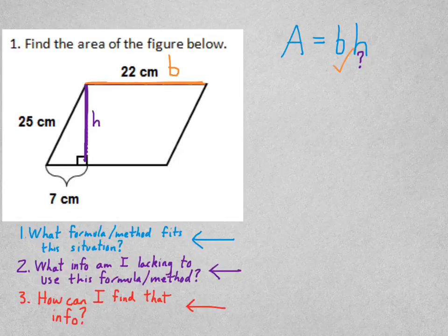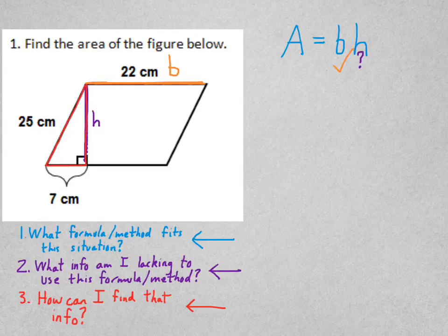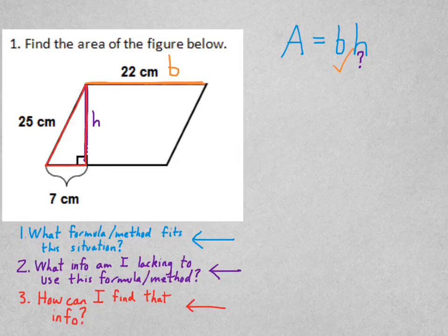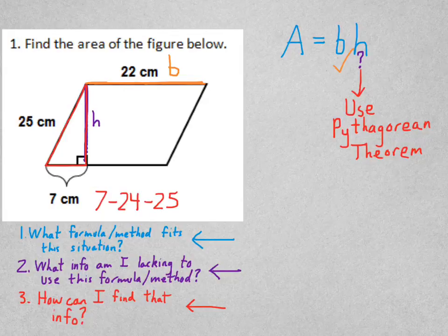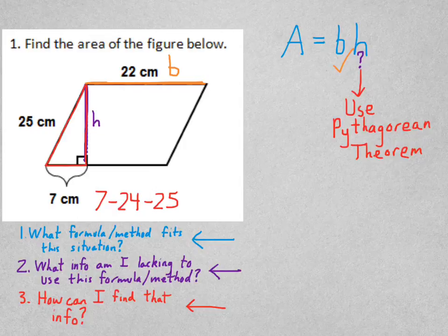The last question is how can I find that information? How can I find what the height is? Well, if you look, we've got this right triangle here. Kind of convenient. I know two sides on the right triangle. I'm looking for another side. So hopefully you're thinking, we should use the Pythagorean theorem. And if you're really thinking about it, you'll notice that this is a 7, 24, 25 right triangle. That's one of our Pythagorean triples. That makes my life even easier. So I know that the height is 24.